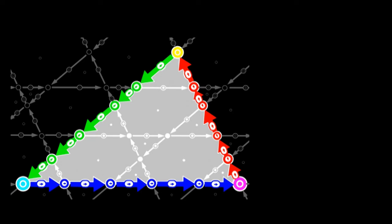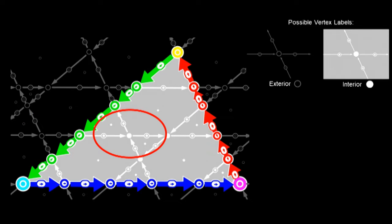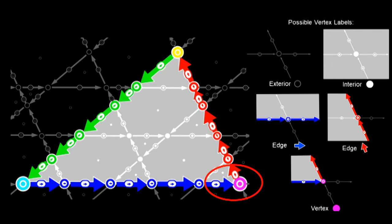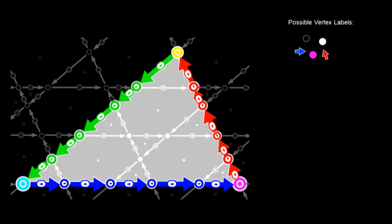Now let's look at the possible configurations for a vertex. The vertex could be outside the triangle. It could be inside the triangle. It could be on a blue edge or on a red edge. Or it could be on a vertex where these two edges meet. So for this vertex, we have five possible labels we could assign to it.